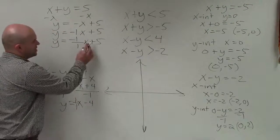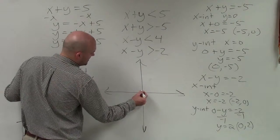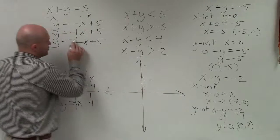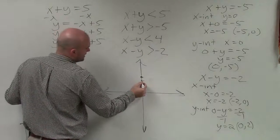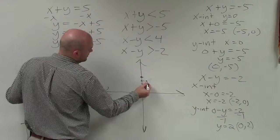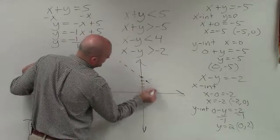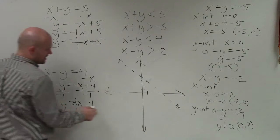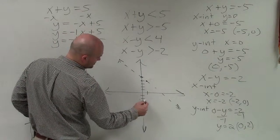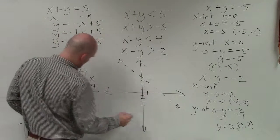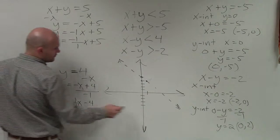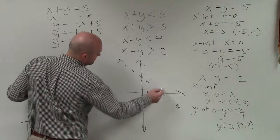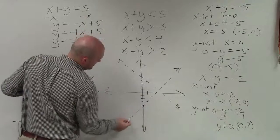For equation 1, the y-intercept is at 5, and the slope is negative 1 over 1, so I graph a dashed line. For equation 2, the y-intercept is at negative 4, and the slope is positive 1 over 1, so I graph another dashed line.